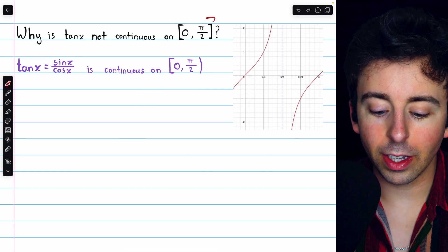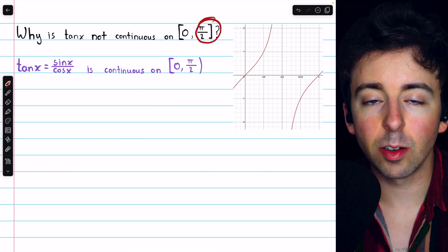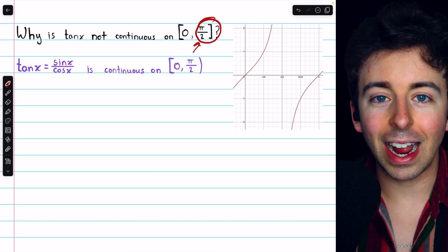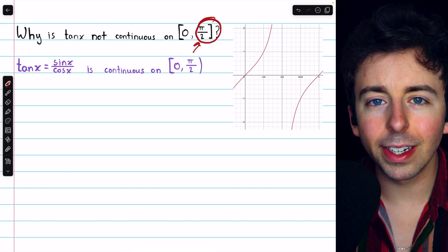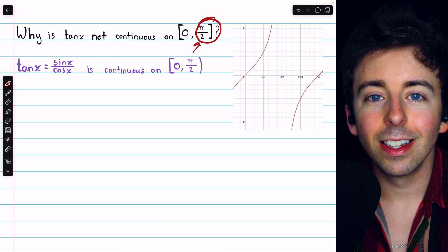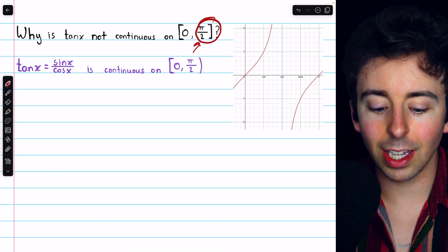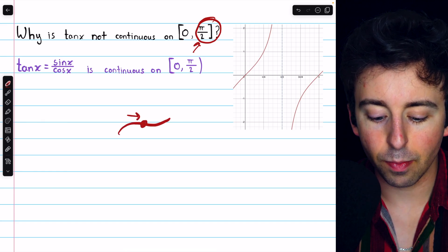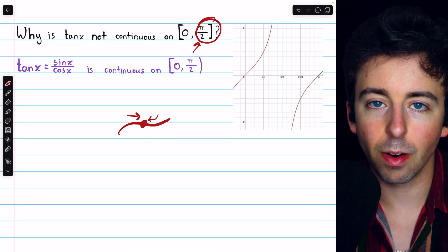Part of your question regarding the continuity of tan x on this interval may specifically be about the endpoint. The fact that pi over 2 is an endpoint does slightly change how we would consider the definition of continuity. Since continuity involves limits, and limits we generally think of as being two-sided, approaching from the left and approaching from the right.